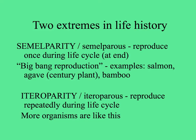There are two extremes in life history, and many good plant examples of each. One is semelparity — reproducing only once in one's lifetime, putting everything into that reproductive event. This is called Big Bang Reproduction, like salmon do, and many plants like bamboo and agaves, also known as century plants, as well as annual plants.